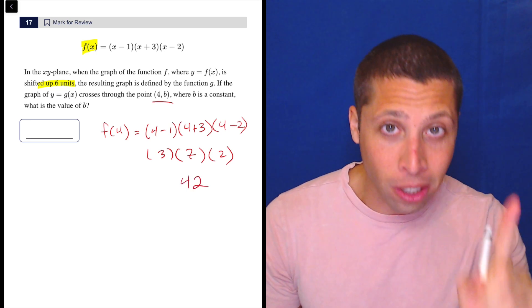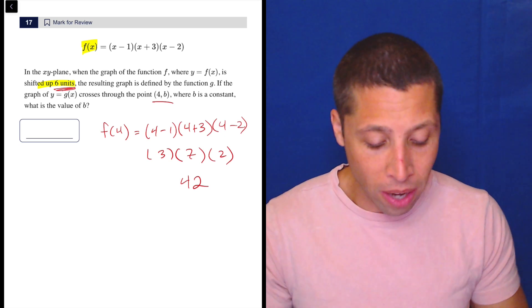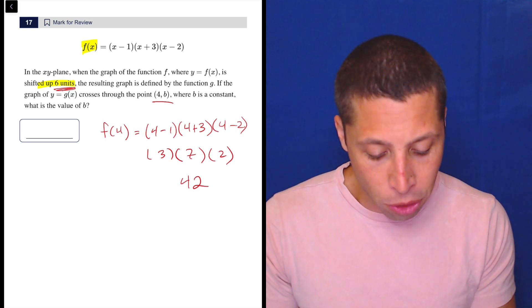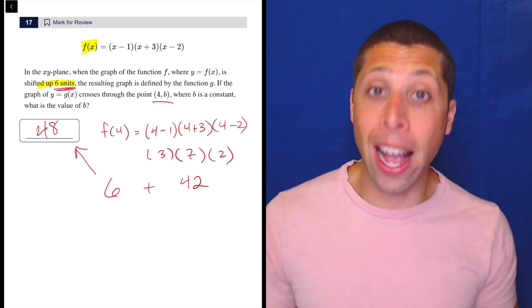Now that is not the answer, and this is where some people make a careless mistake because remember, it says we have to move it up six. So we have to increase that by six. 42 plus six is 48. And that's the actual answer.